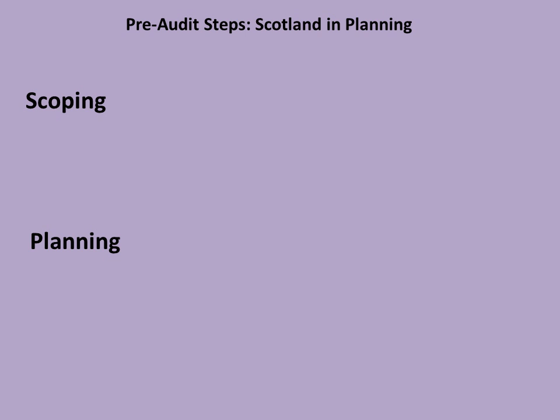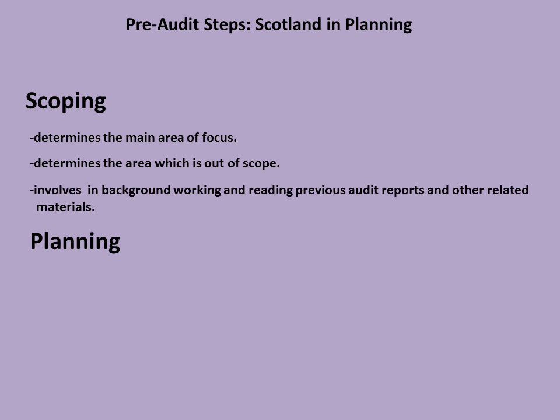Now, the pre-audit steps — 'Scotland is planning' means scoping and planning. In scoping, the auditor determines the main area of focus, determines the area which is out of scope, and also involves background working and reading previous audit reports and other related materials.